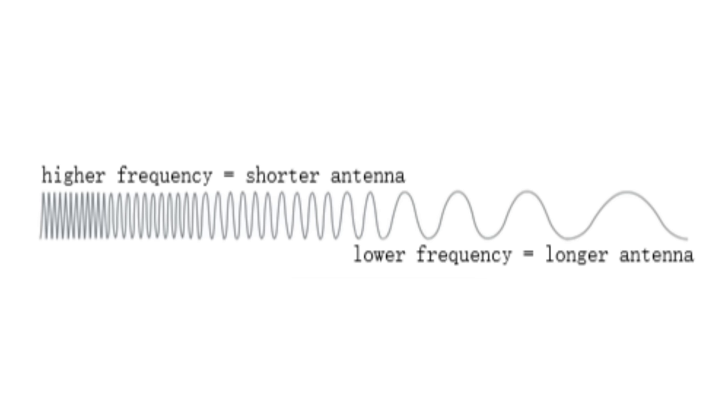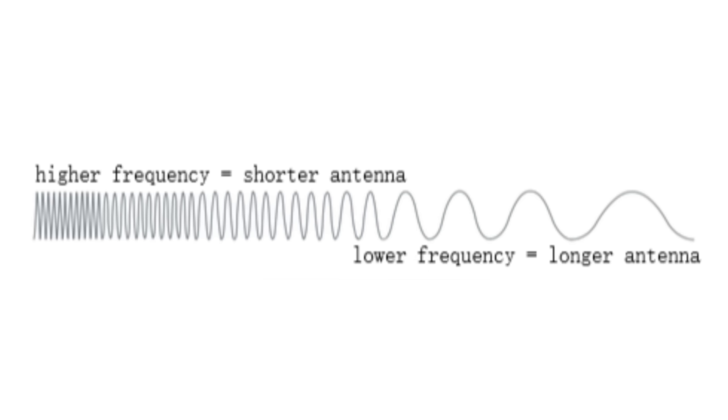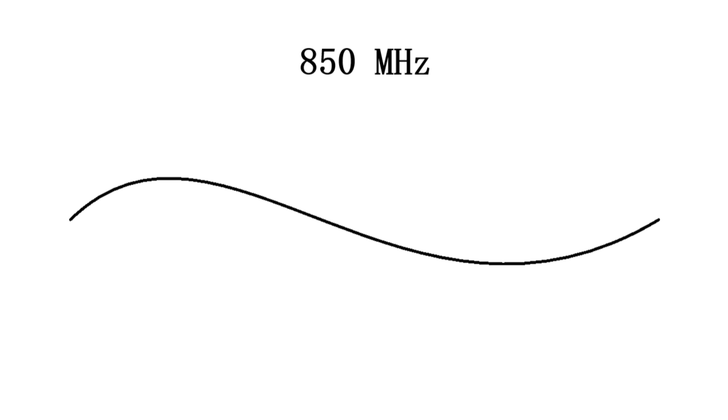An antenna's size is inversely proportional to the wavelength of the signal it receives. Since the first cell phones worked on the 850 MHz spectrum, which is 35.2 cm long, Fred will build his to work on that spectrum, meaning all he needs is a copper wire 17.6 cm long.